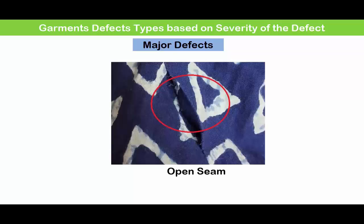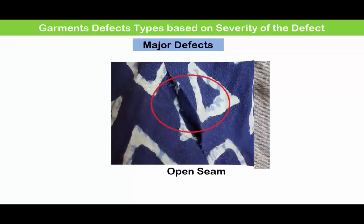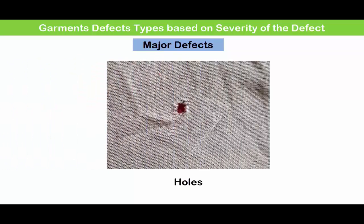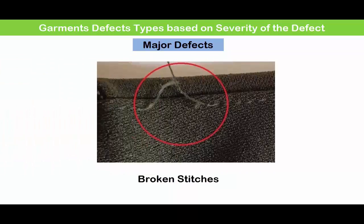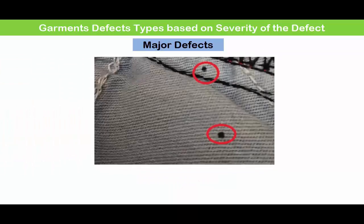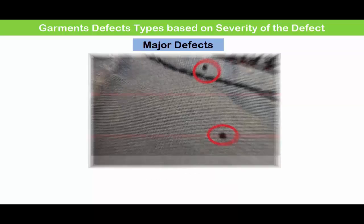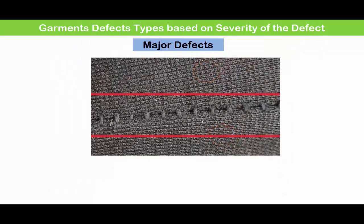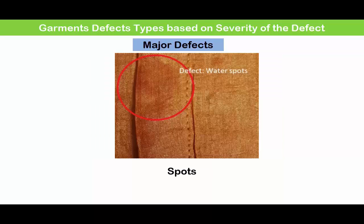Examples of major defects in garments include: open seam, holes, broken stays, damaged fabric, incorrect SPI, and spots.